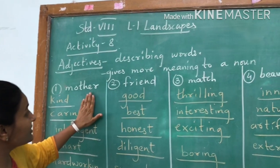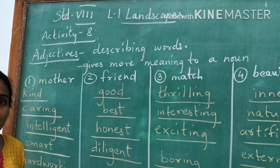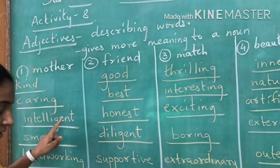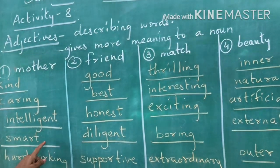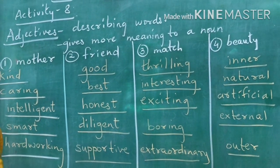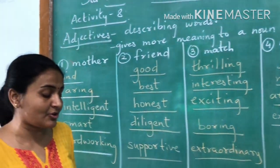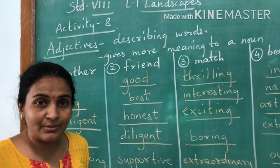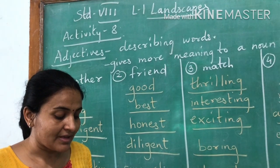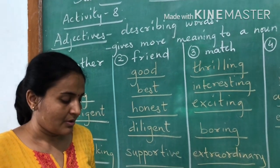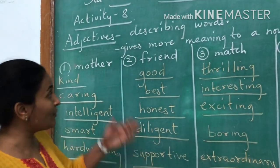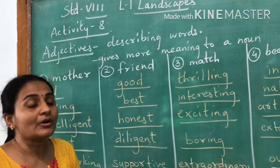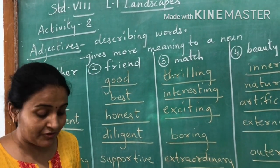One title given in the textbook is 'mother.' You can write kind mother, caring mother, intelligent mother, smart mother, hard working mother. The words given in your textbook are loving mother, gentle mother, strict mother, good mother, working mother. Some more words you can use for mother show what kind of a mother she is.